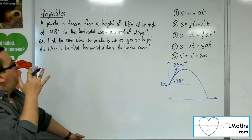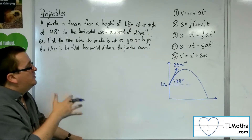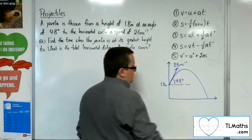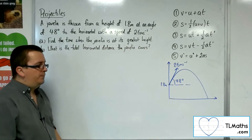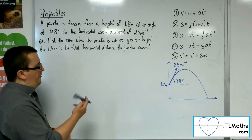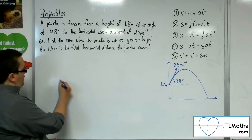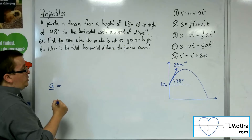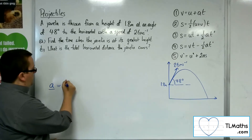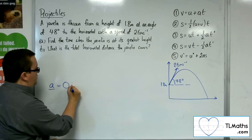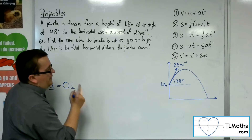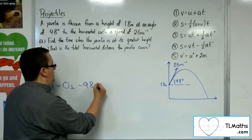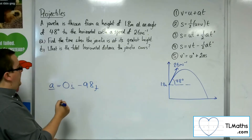So find the time when the javelin is at its greatest height — when is it at that point? Let's start off by writing down our equations, our vectors. So the acceleration: we've got no acceleration in the x direction. The only acceleration is in the vertical component, so minus 9.8j.